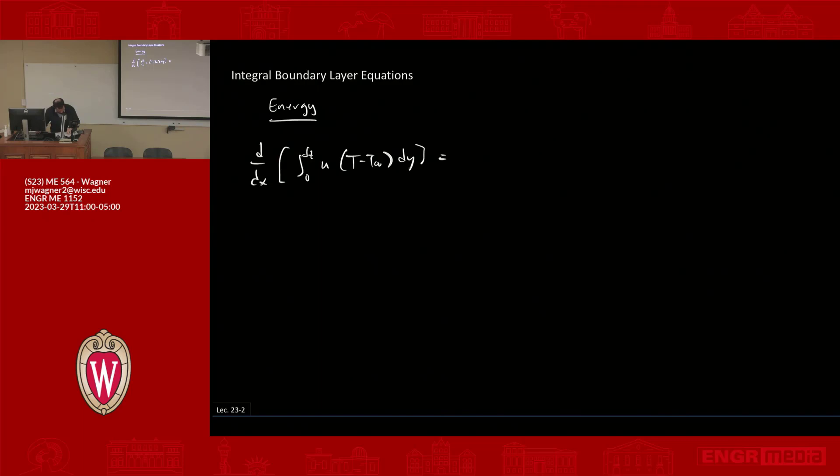So that's equal to V at Y equals zero times T S minus T infinity plus one over rho C, Q dot double prime S minus Q dot double prime at Y equals delta T. And then last term is plus mu over rho C times the integral from zero to delta T of partial U with respect to Y, that whole derivative squared dy.